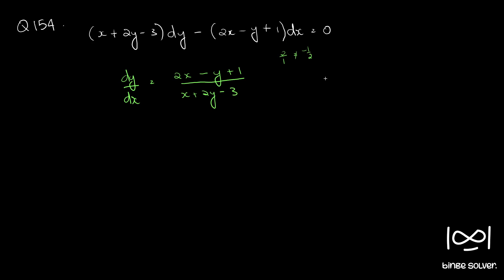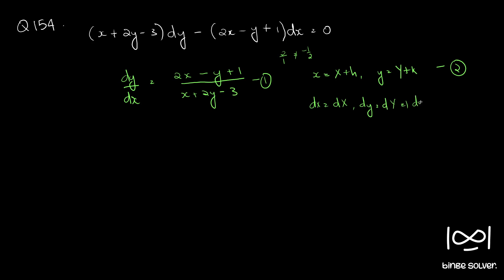Since the ratios are not equal, we can do the substitution: x equals X plus h and y equals Y plus k — call this equations 1 and 2. Differentiating equation 2, we get dx equals dX and dy equals dY. Therefore dy by dx equals dY by dX. Call this equation 3.